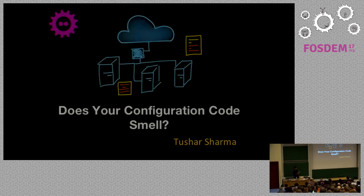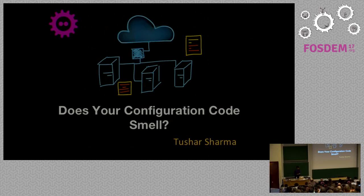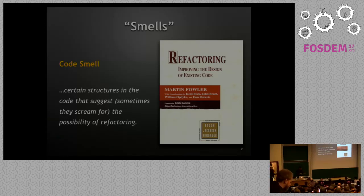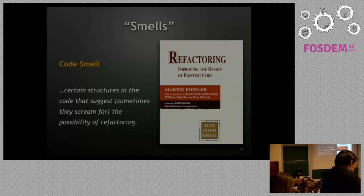So what I'm going to talk about: smells in general, configuration smells in particular. I'm going to take a few examples and show why we consider them as a smell. And towards the end, I'll talk about tools that we can use to detect these smells. Let's start with the term smell. The term smell was introduced in a book by Kent Beck, and he described it as certain structures in the code that suggest or sometimes scream for the possibility of refactoring. This is an informal definition, and I would like to give you a deeper, better idea of what a smell may look like by using an analogy.